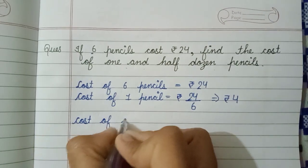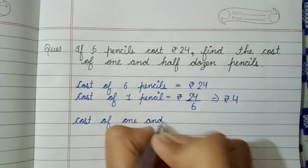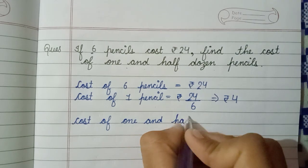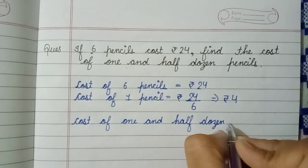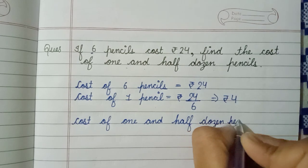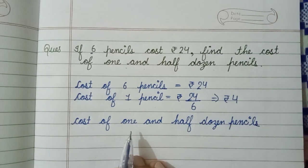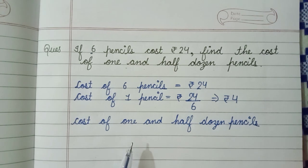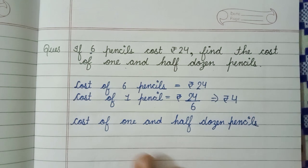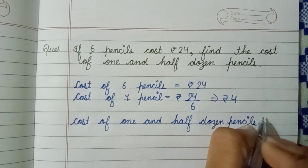Now we can find the cost of one and half dozen pencils. As you know, one dozen is equals to 12 and half dozen is equals to 6. Now add 12 and 6, which is equals to 18.